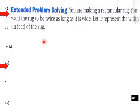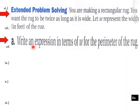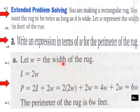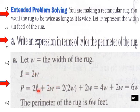Write an expression in terms of W for the perimeter of the rug. Let W equal the width of the rug, so the length equals 2W. The perimeter equals 2L plus 2W, and since L equals 2W, we plug in 2W: 2 times 2W plus 2W equals 4W plus 2W equals 6W. So the perimeter of the rug is 6W feet.